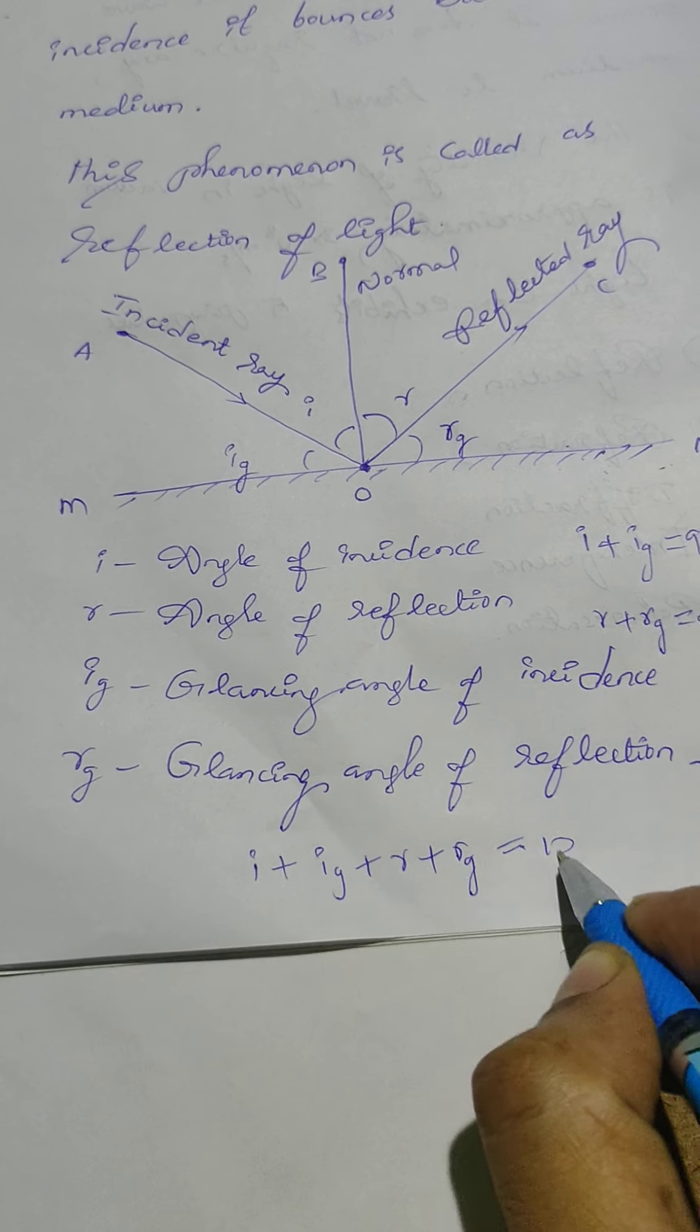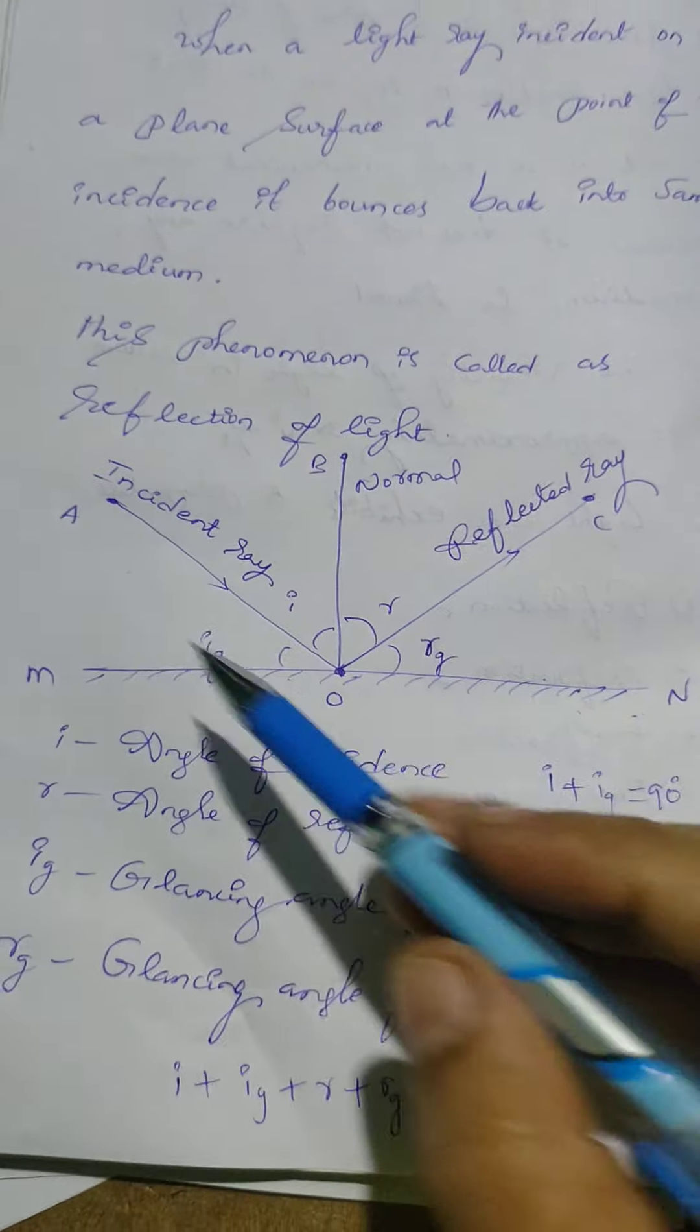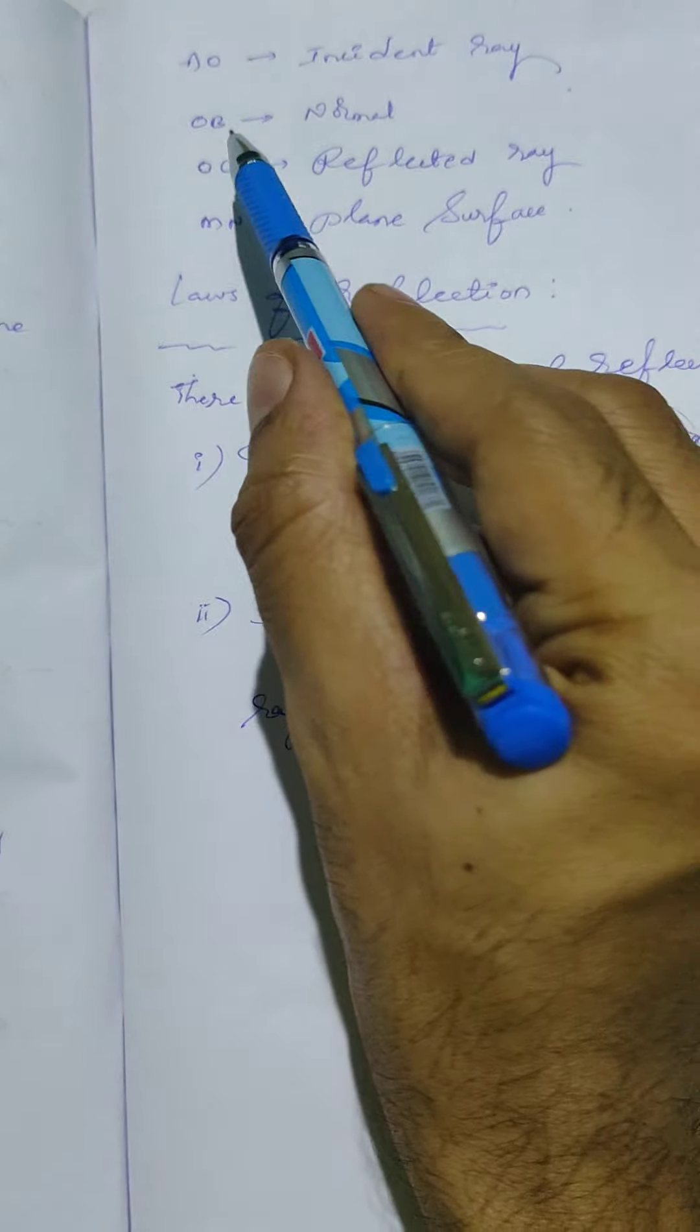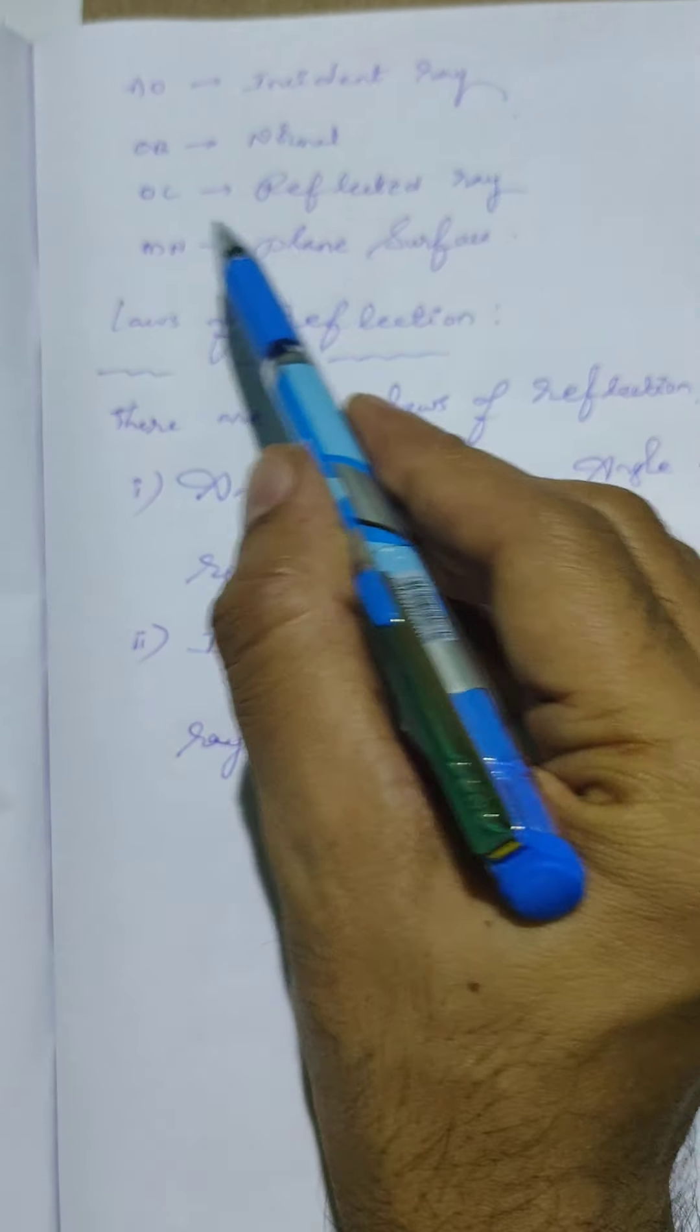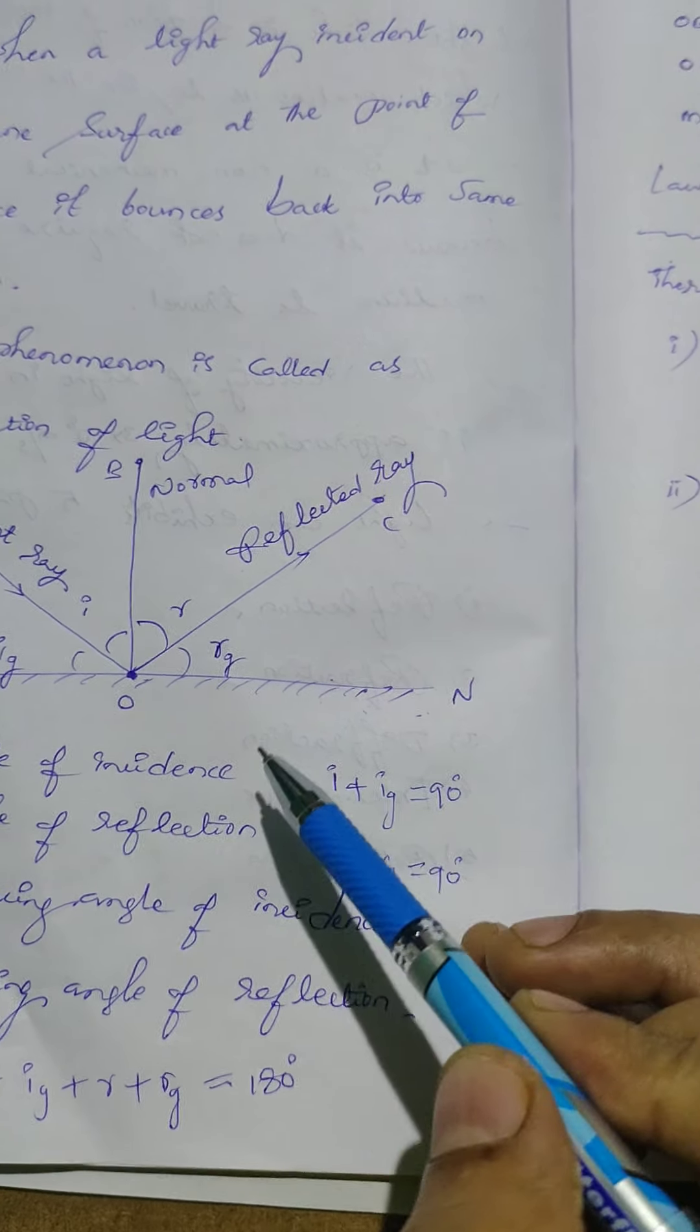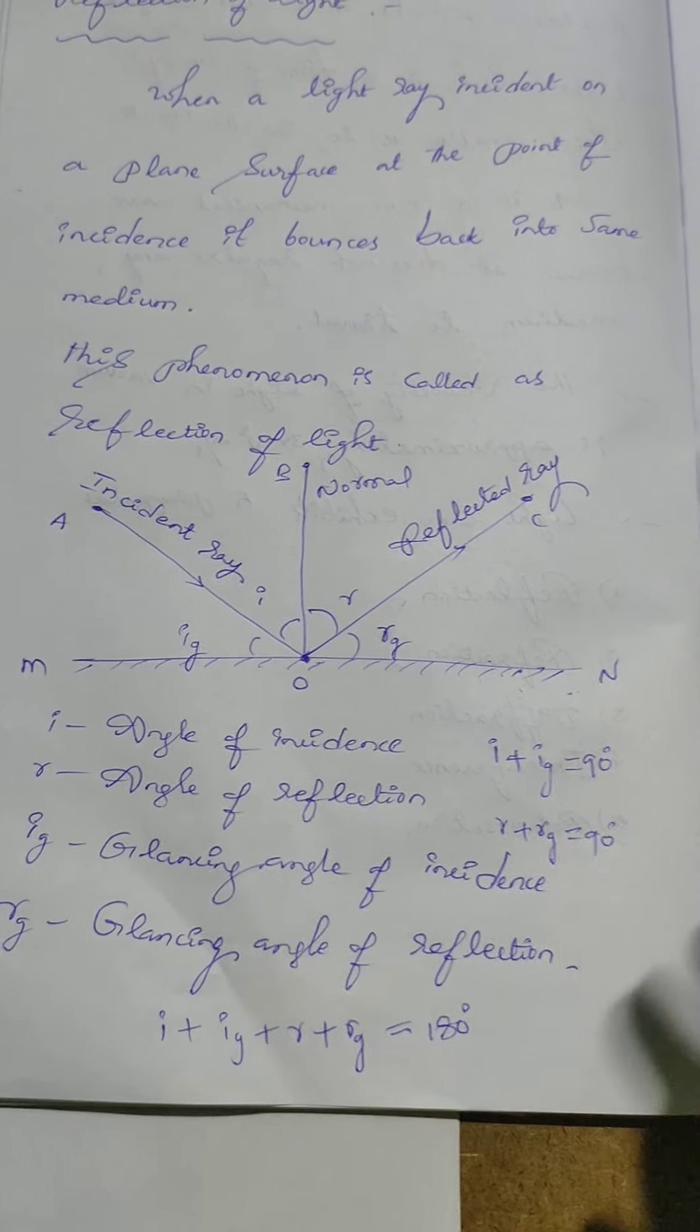Next here AO means incident ray, see diagram here. And OB means normal. And OC means reflected ray. And MN is the plane surface. See here MN is the plane surface.